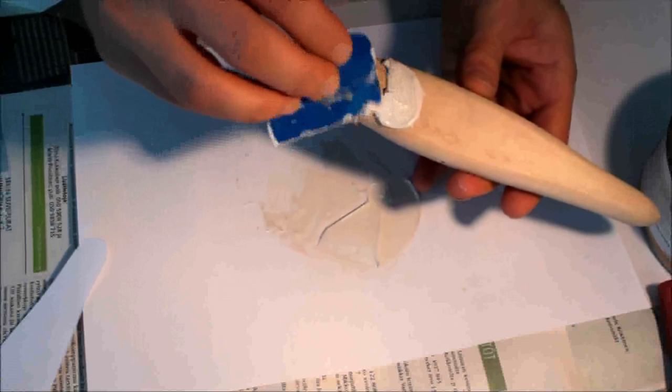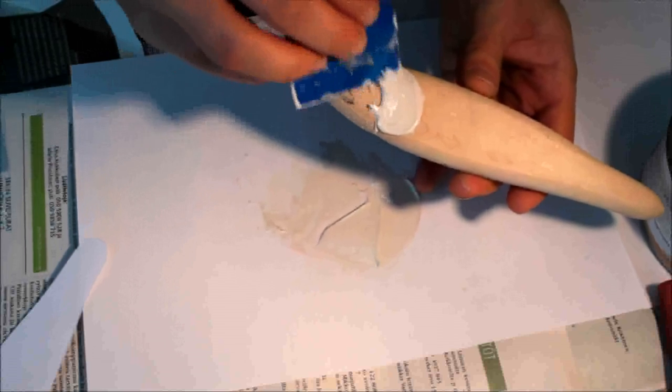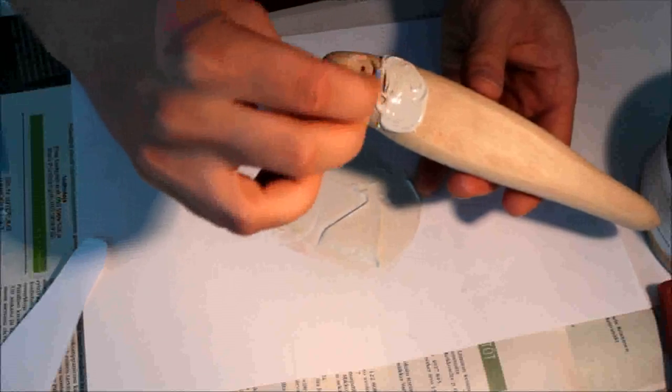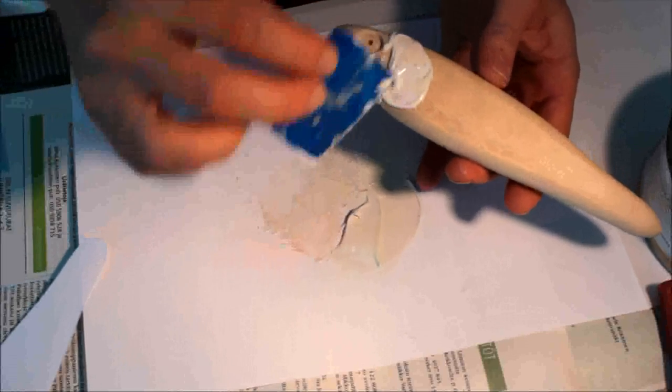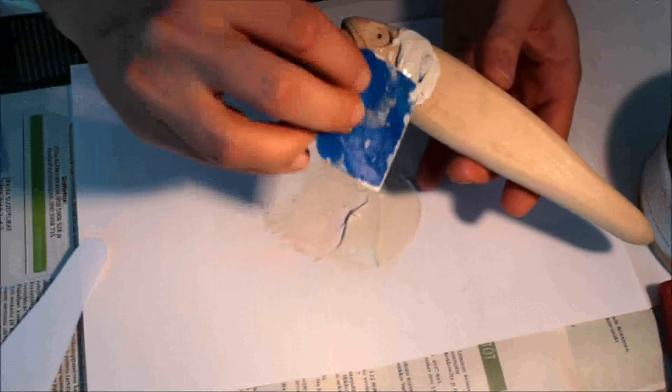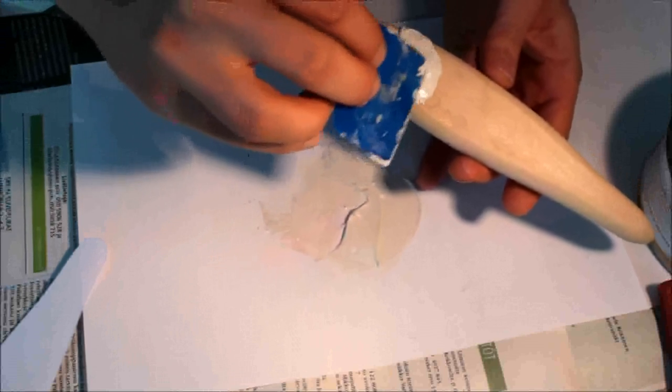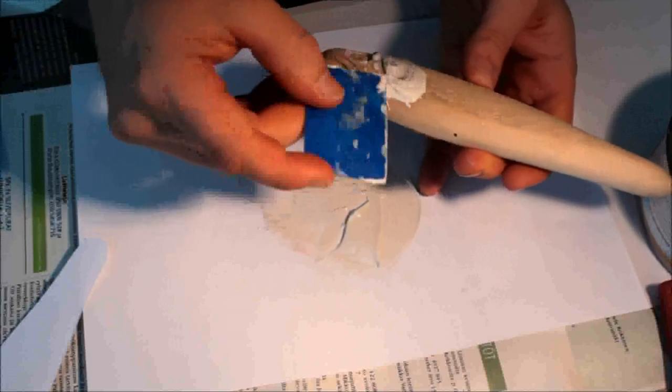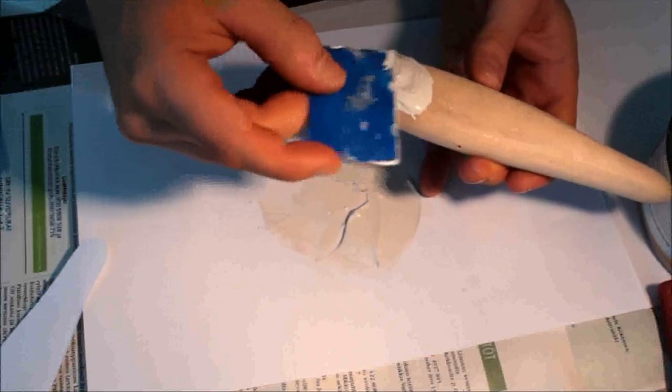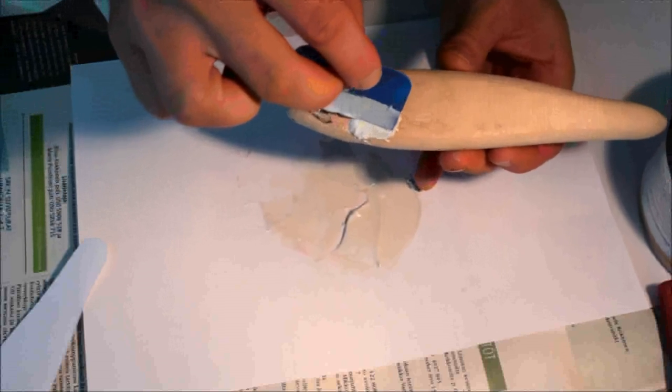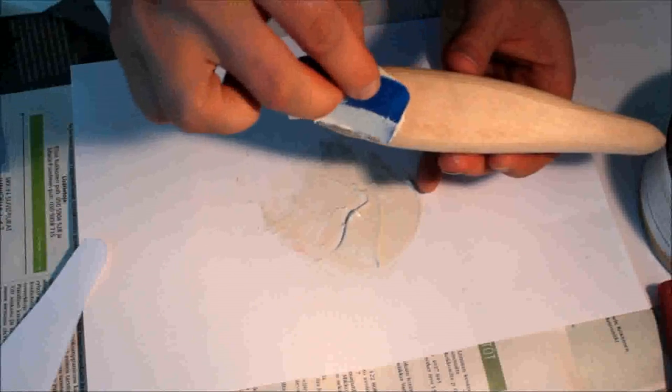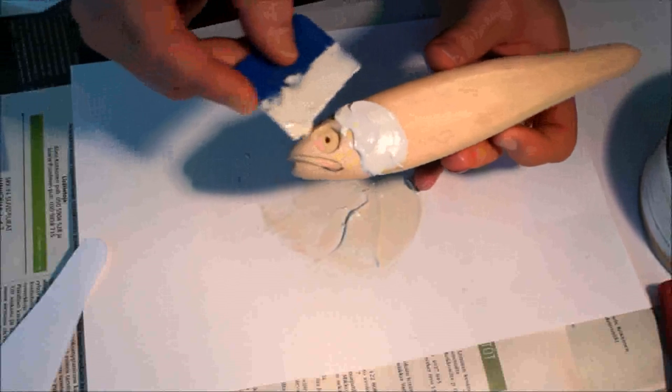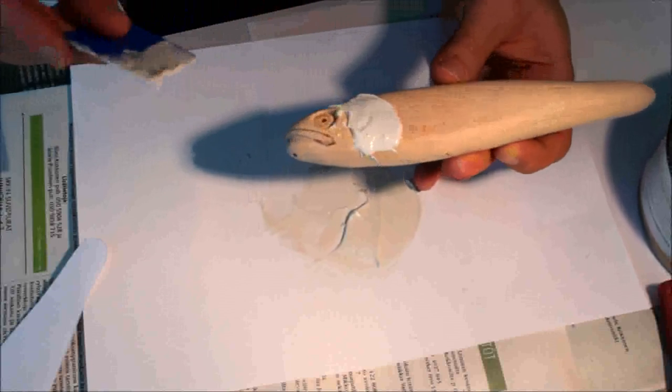And I usually try to make it as flat as I possibly can, because later on when we start to sand this thing, this stuff really gets hard as a rock. So it can be very difficult to shape afterwards. But if you start to work on it like maybe 10 minutes after it's been hardened, and it's still kind of soft, it's much more easier to work with that stuff.